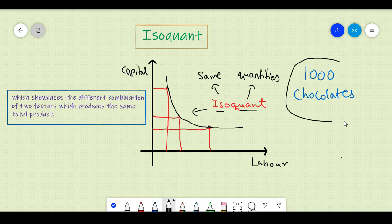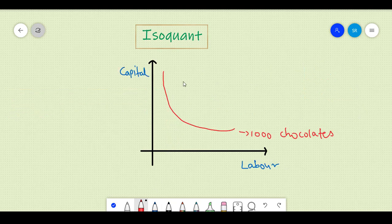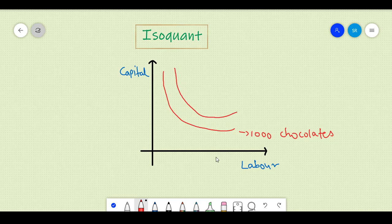In our case, the total product is thousand chocolates. One thing to remember is that a higher isoquant showcases higher level of production. So, an isoquant like this,